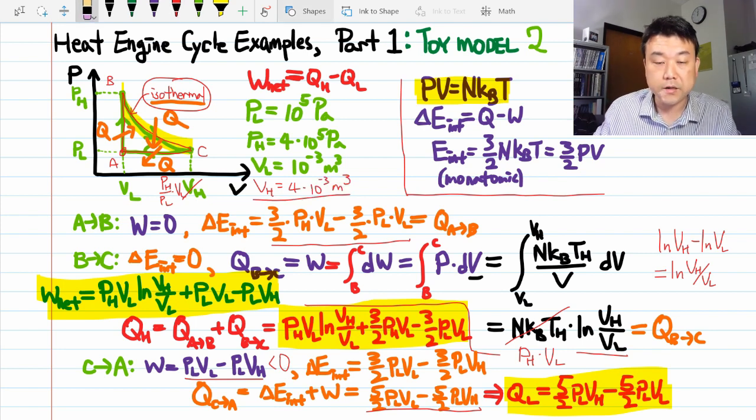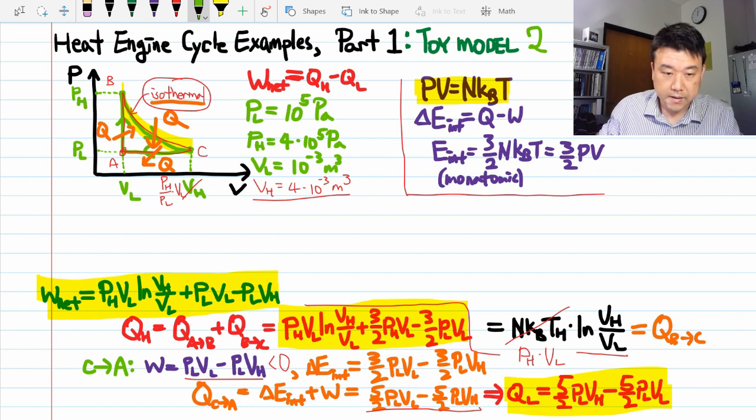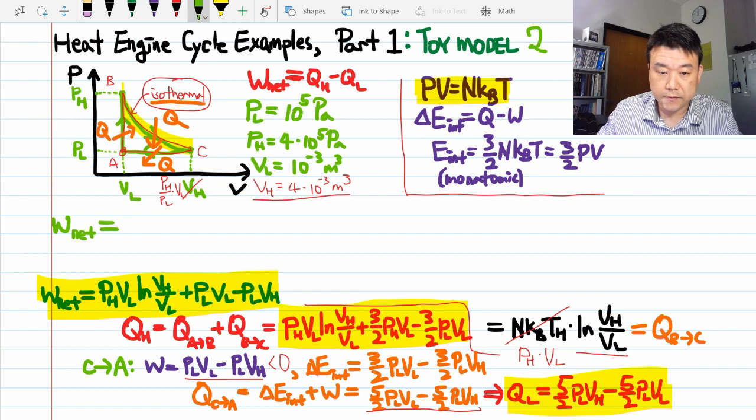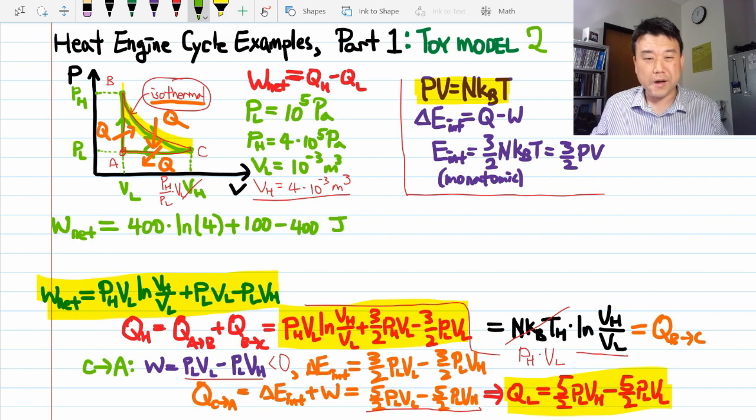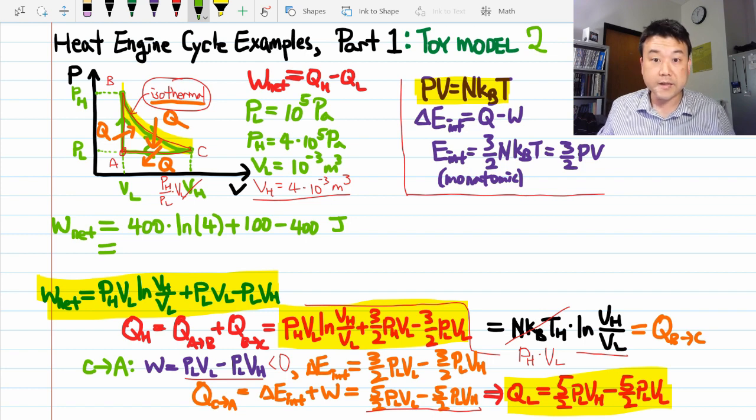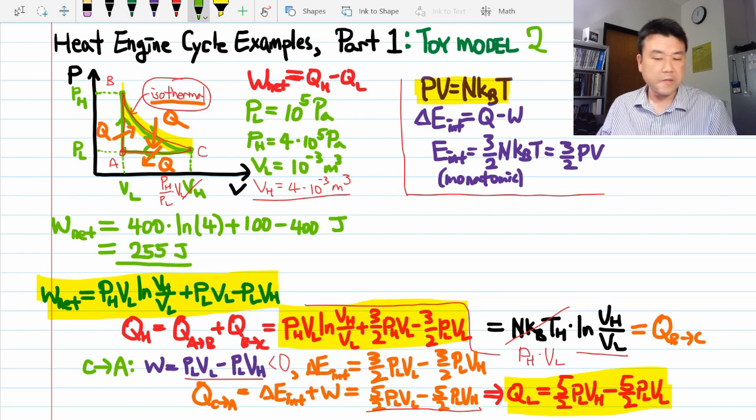Let me clear out some space here so that I can plug in numbers. Alright, so the net work done is pH times VL. That's 400 Joules times the natural log of VH over VL plus PLVL or 100 Joules minus PLVH or 400 Joules. So, I'm going to have to use calculator for this. Alright, my calculator says that the work done is about 255 Joules.